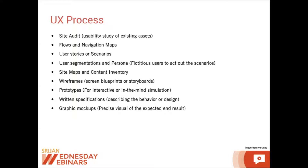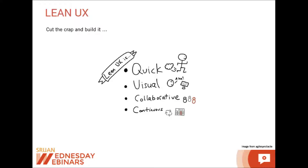While building MVPs, you have to be really lean and improve this workflow. Lean UX, in very simple terms, is: cut the crap and just build it. Forget about documentation, segmentation, stories, scenarios — forget all of that and just build the stuff. Start building it right away. You have to be really quick.